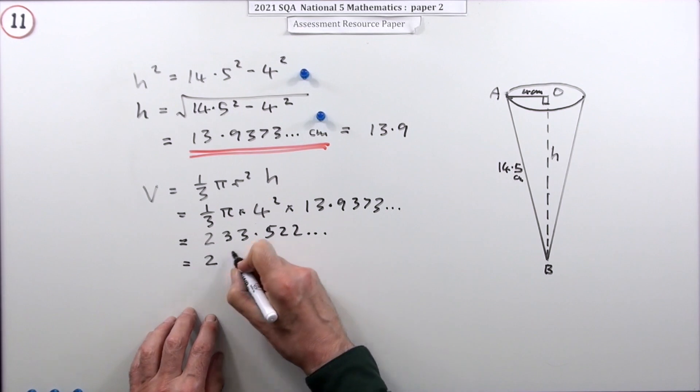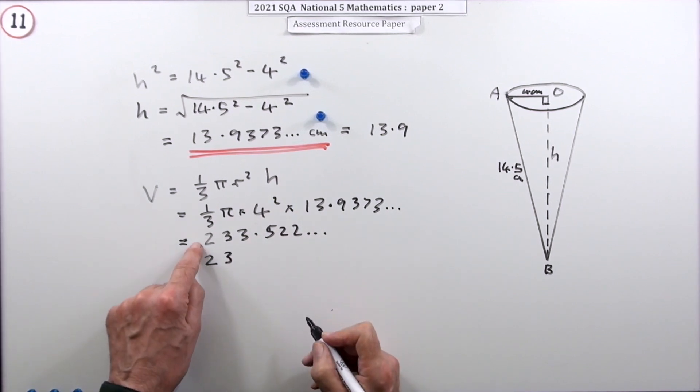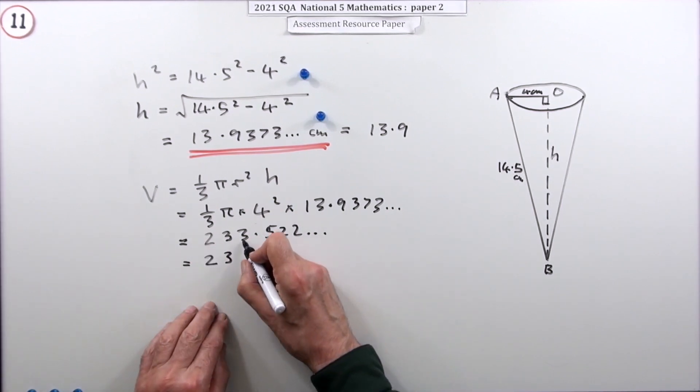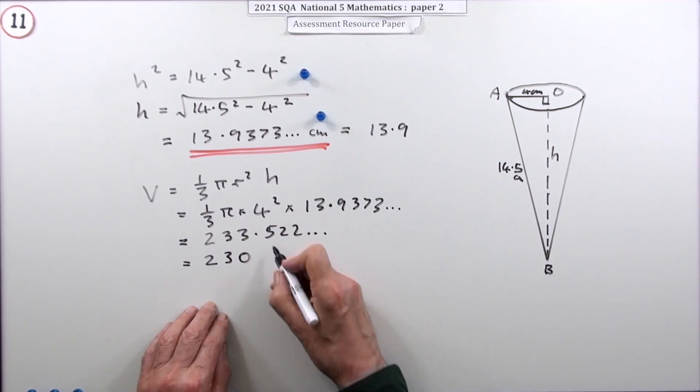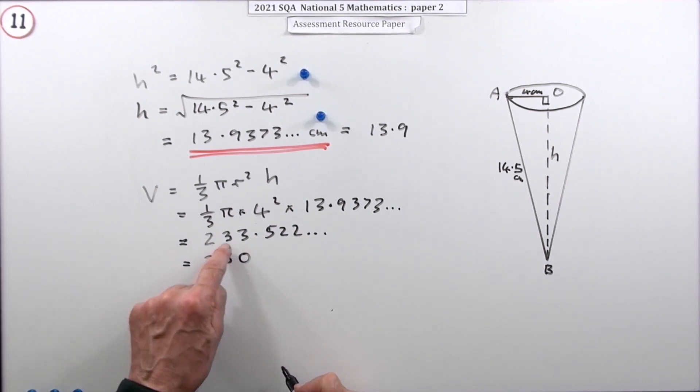So it was a bit of a waste keeping all those figures, all that accuracy. Two significant figures just means the two and the three. So that just goes to zero because I don't want three figures, and it's not going to increase that three.